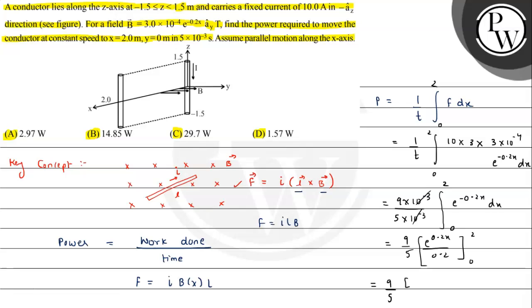This will be 9 upon 5, integration of this will be divided by 0.2 with limit from 0 to 2. So this will be 9 by 5, and we will have e^(-0.4) here with a negative sign.